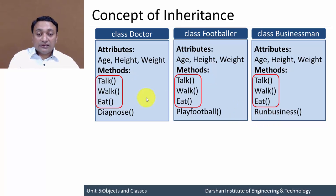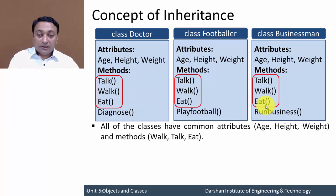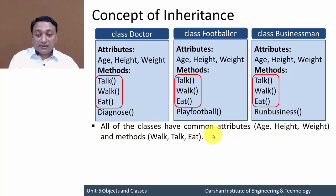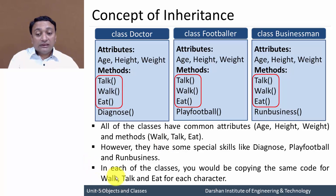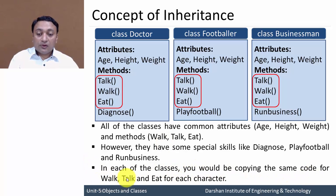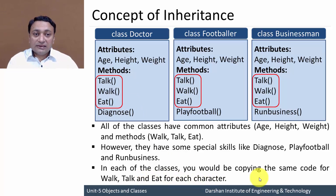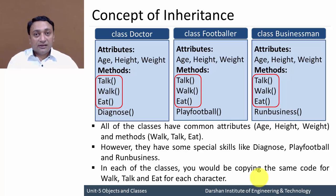These three common member functions and attributes like age, height, and weight are shared across all classes. So in each class you would be copying the same code for walk, talk, and eat. This code duplication is one of the main reasons where the concept of inheritance is required.